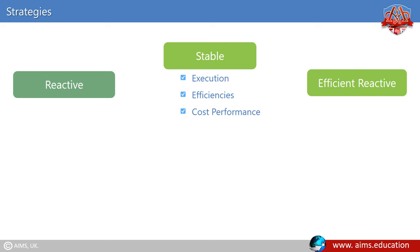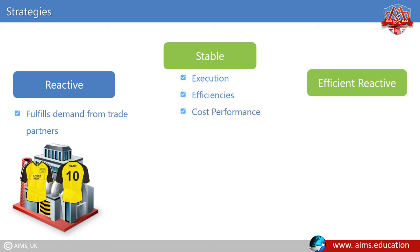Reactive supply chain strategy works well when the chain acts to fulfil demand from trade partners. For example, manufacture of sports team apparel for fans. When a team makes it to the next round, more products are needed. However, for the losing team, demand virtually disappears.